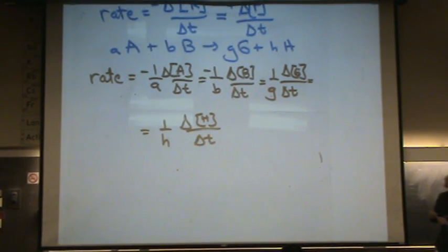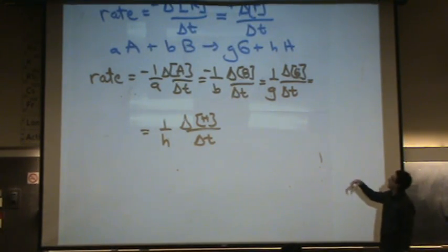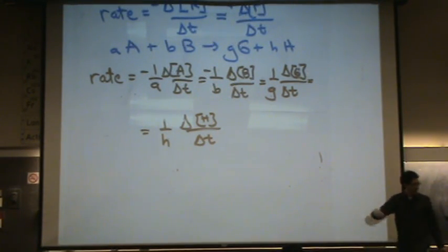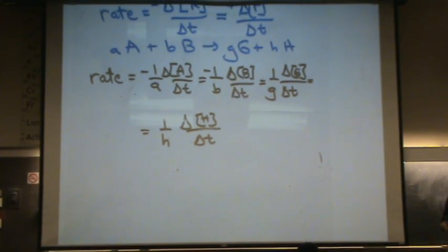The reason I have to put that one over A, one over B, one over G, one over little h is for the molar ratios to be correct. So to get the molar ratios right I have to do that one over thing.